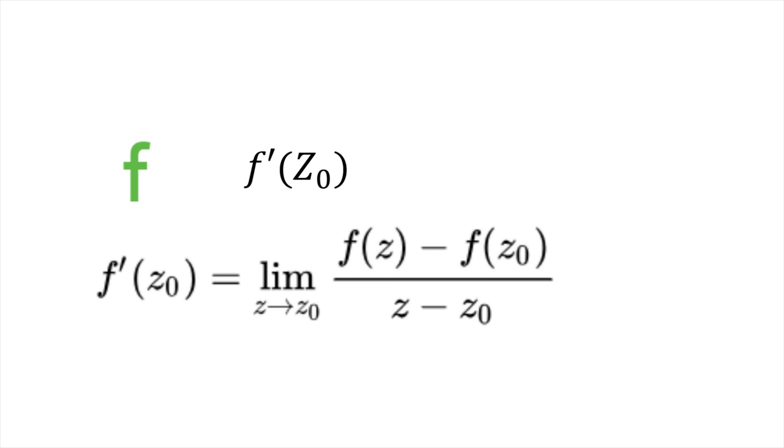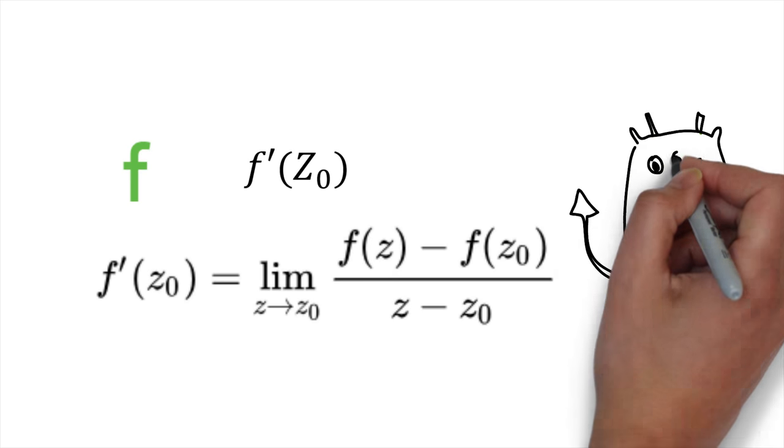Given a complex valued function f of a single complex variable, the derivative of f at a point z0 in its domain is defined by the following limit. If the limit exists, we say that f is a complex differentiable at point z0.